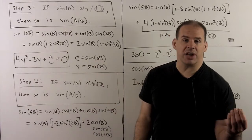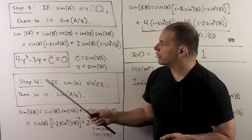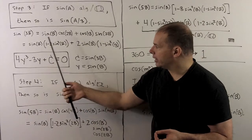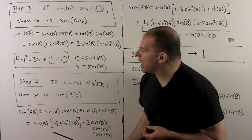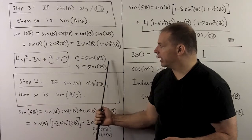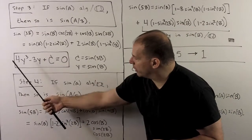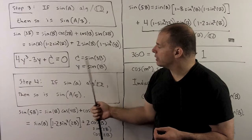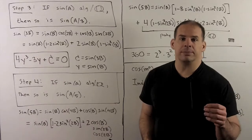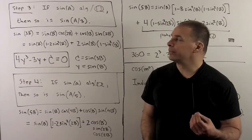Next step: if sine of a is an algebraic number, then so is sine of a divided by three. We proceed as before, taking sine of 3b and applying the angle sum formula for sine. Working this out, we see that sine of b is the root of the polynomial 4y cubed minus 3y plus c, where c equals sine of 3b. So if sine of 3b is an algebraic number, then sine of b satisfies a polynomial with entries in the algebraic numbers, so sine of b is an algebraic number itself.